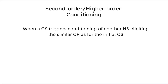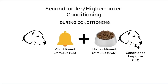Let's unpack this with an example. During the conditioning phase, repeatedly presenting the neutral stimulus — the sound of a bell — immediately followed by the unconditioned stimulus — the meat powder — led to eliciting a conditioned response, which was salivation, just to the presence of the bell alone. We observe this in the after-conditioning phase.